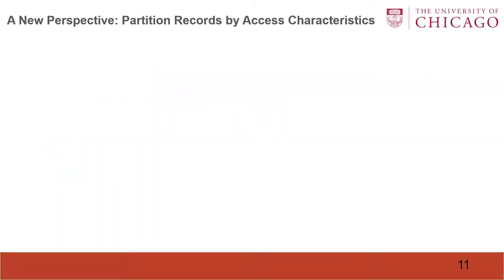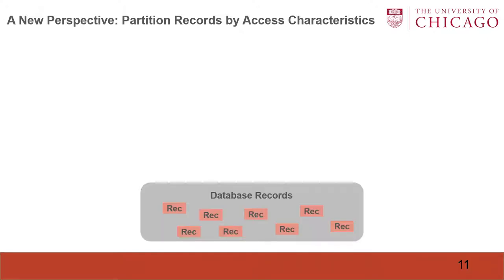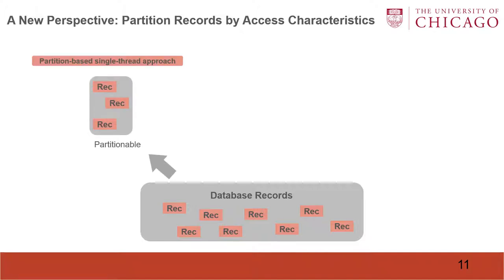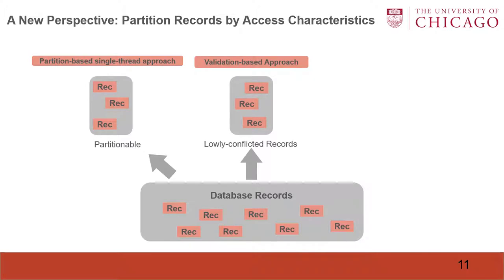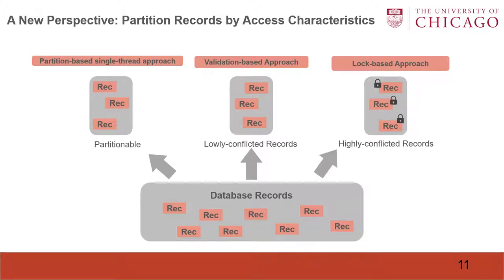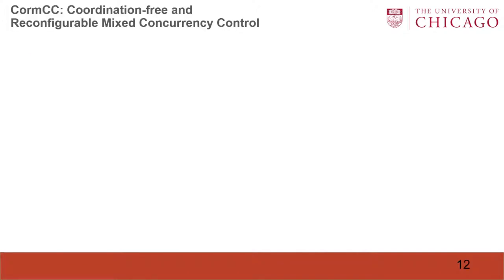We take a new perspective of mixed concurrency control, which is to partition records by access characteristics. For example, if a partition is partitionable, we can use a partition-based single-thread approach. For low-conflict records, we can use a validation-based approach. Finally, for highly-conflicted records, we can use a locking-based approach. Therefore, we present COMCC, a coordination-free and reconfigurable mixed concurrency control.